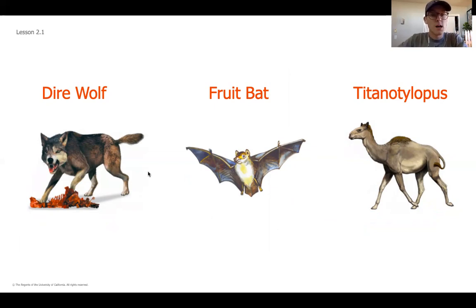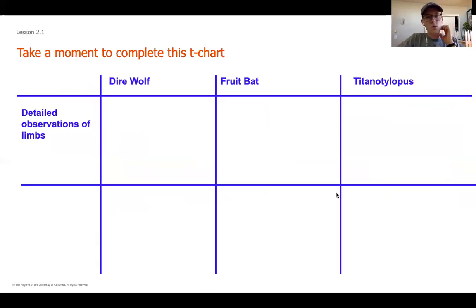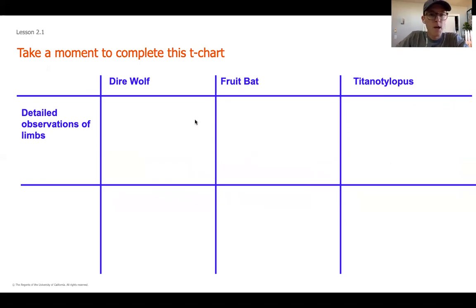The three we're going to zoom in on today are the dire wolf, the fruit bat, and the titanolophus — which is a creature that looks similar to a camel. We're going to be comparing these, and one thing that's really helpful when comparing is creating a T-chart. All of this outlined in blue you may want to write down. You're going to have two horizontal lines and three vertical lines so that you can have six total boxes.